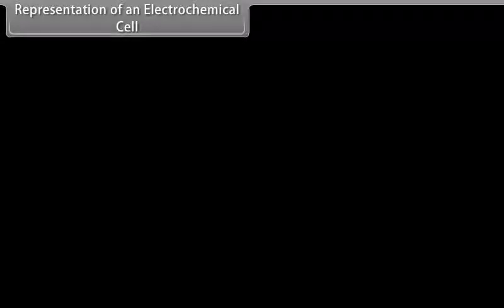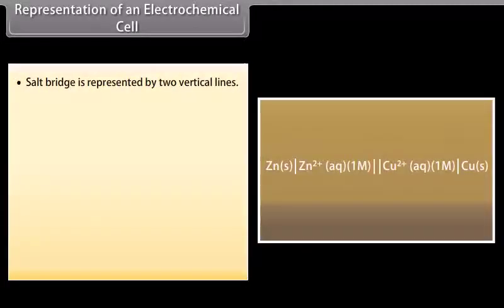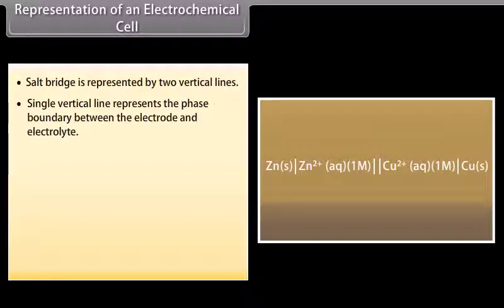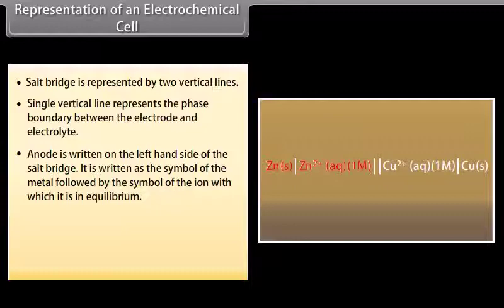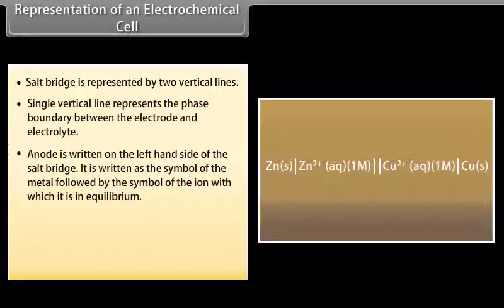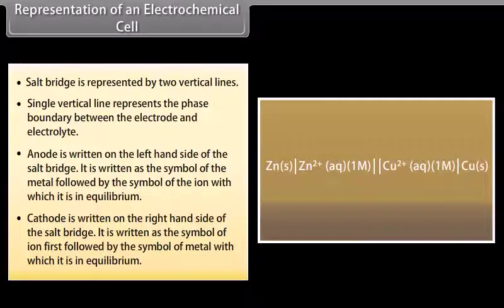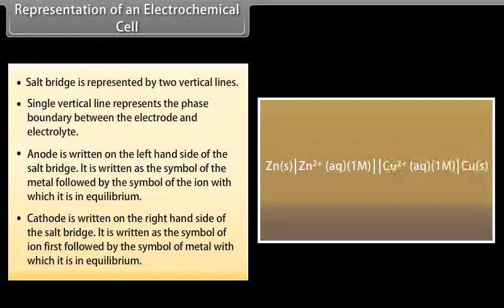Representation of an electrochemical cell: A galvanic cell is represented as follows — the salt bridge is represented by two vertical lines, and a single vertical line represents the phase boundary between the electrode and electrolyte. The anode is written on the left-hand side of the salt bridge, as the symbol of the metal followed by the symbol of the ion with which it is in equilibrium. The cathode is written on the right-hand side, as the symbol of the ion first, followed by the symbol of the metal.